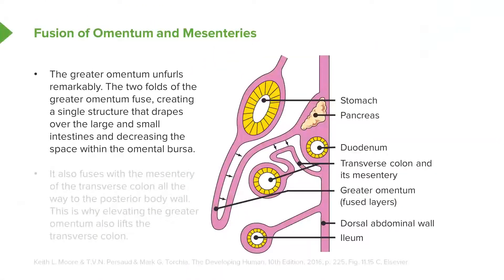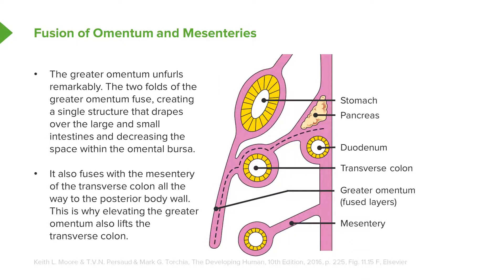In this image, we can see in the sagittal cut how the lesser sac is present posterior to the stomach but anterior to the pancreas. And that space between folds of the greater omentum is continuous with it. As the greater omentum develops, those two folds will fuse together, decreasing the space present in the omental bursa. At the same time, the greater omentum fuses with the mesentery of the transverse colon. Because of that, when you encounter the greater omentum in the abdominal cavity and lift it up, you may move the stomach, but you'll also move the transverse colon, which is present just posterior to the greater omentum.